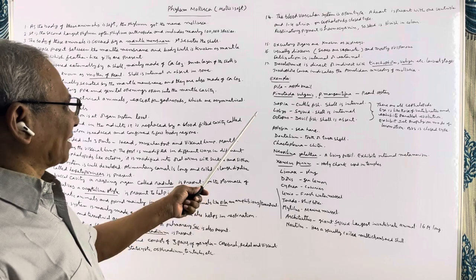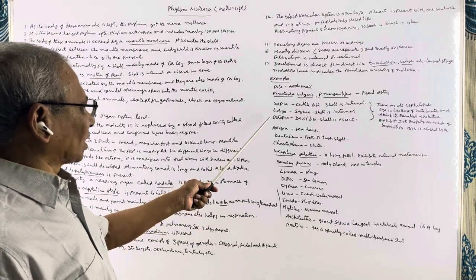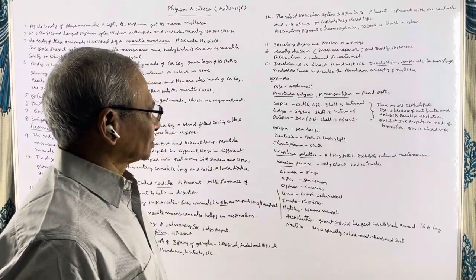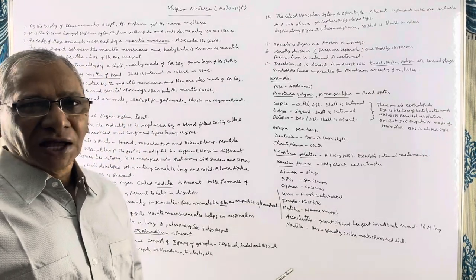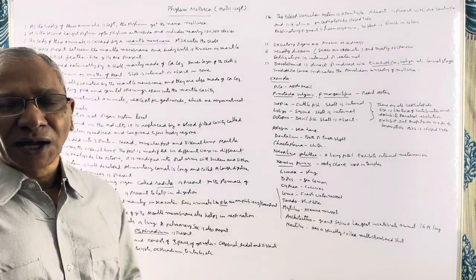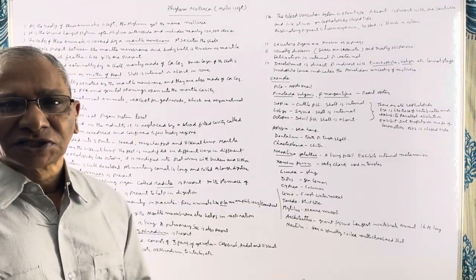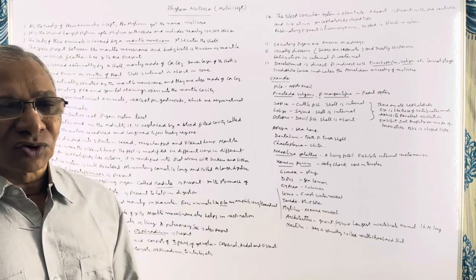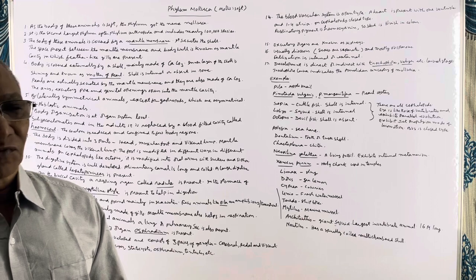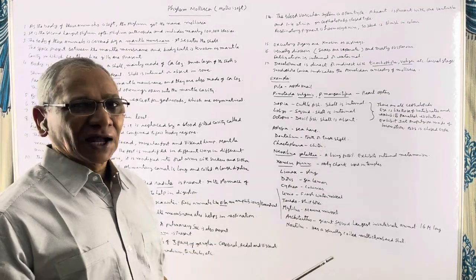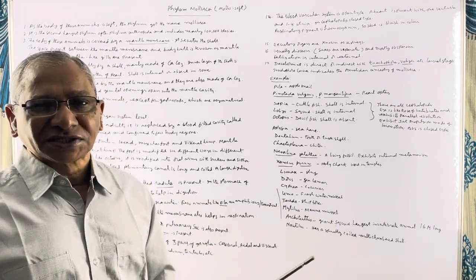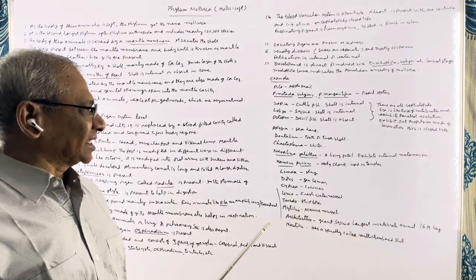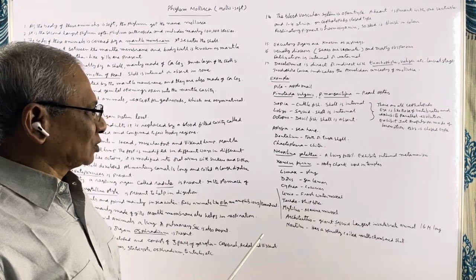Sepia, Loligo, and Octopus all belong to class Cephalopoda. In cephalopods, the eye is very well developed and it resembles the vertebrate eye. The development of a similar type of eye in cephalopods and vertebrates indicates the presence of parallel evolution.